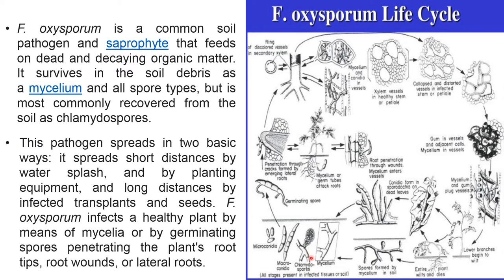These pathogens spread in two basic ways. They spread short distances by water splash, by plant contact, and by planting equipment, and long distances by infected transplants and seeds. Fusarium oxysporum infects healthy plants by means of mycelium or spores penetrating the plant root tip, root wounds, or lateral roots.